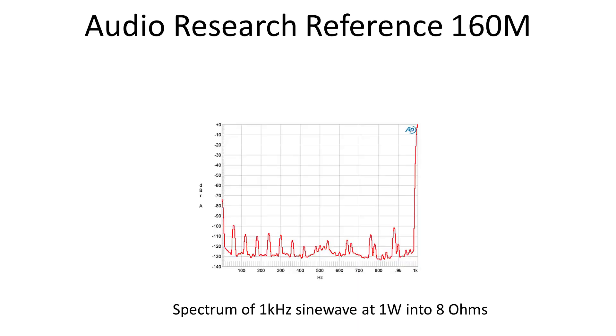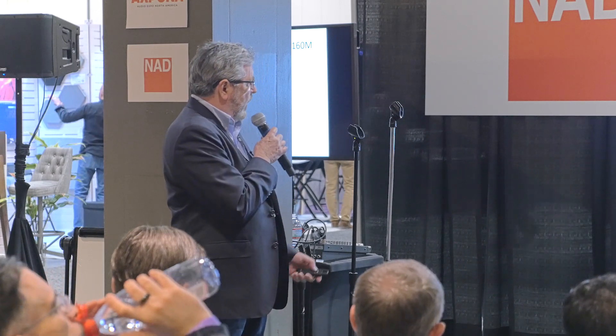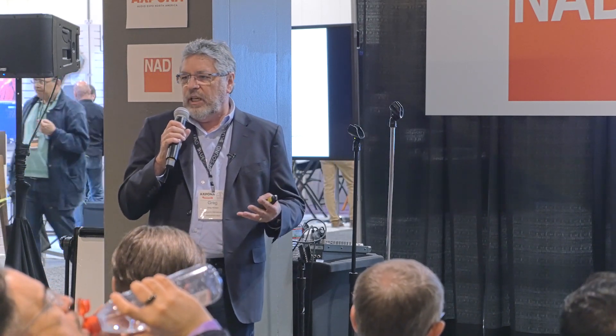This is an Audio Research amplifier — a very expensive monoblock. It's an excellent performing amplifier, just showing how an amplifier like this is not going to sound as quiet as either the Air or the NAD. You can see there's a fair amount of spikiness, probably power supply related. This is an amplifier that runs at very high voltages, so there's a lot more potential noise than in these more efficient solid-state designs.